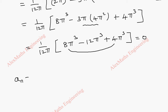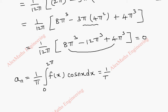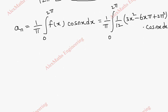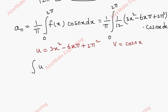Now coming to an. The formula is 1 by pi integral from 0 to 2 pi of f of x times cos nx dx. We substitute f of x as 1 by 12 times 3x squared minus 6x pi plus 2 pi squared into cos nx dx. Here we are going to use Bernoulli's formula where u is the algebraic term 3x squared minus 6x pi plus 2 pi squared and v is the trigonometric term cos nx. The formula is integral of u v dx equals u v1 minus u dash v2 plus u double dash v3, and so on.